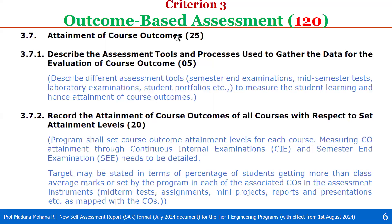Then 3.7, attainment of course outcomes, which carries 25. This is divided into two sub-parameters. The first one is 3.7.1: describe the assessment tools and processes used to gather the data for evaluation of course outcomes, which carries 5 weightage. Here we have to describe different assessment tools with respect to semester-end examinations, mid-semester tests, laboratory examinations, student portfolios, etc., whatever evaluation components you are following, to measure student learning and attainment of course outcomes. The complete process with respect to all these parameters we have to provide.